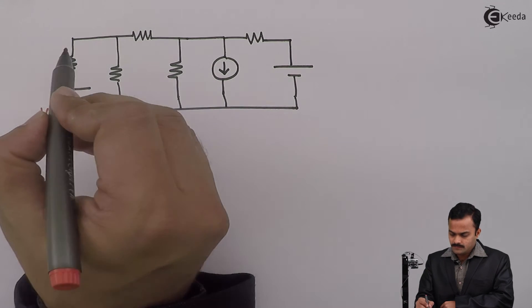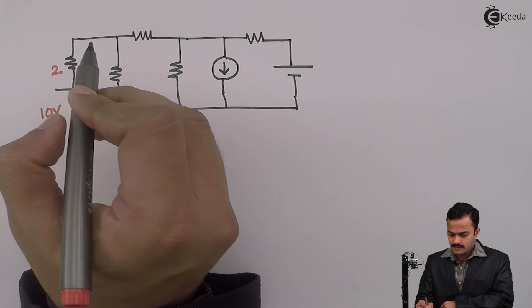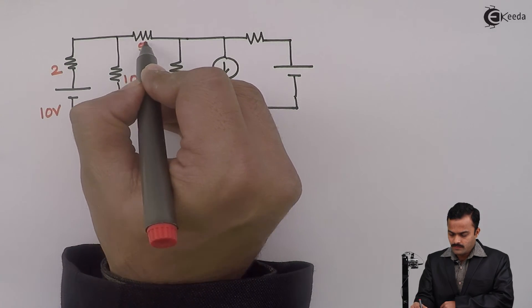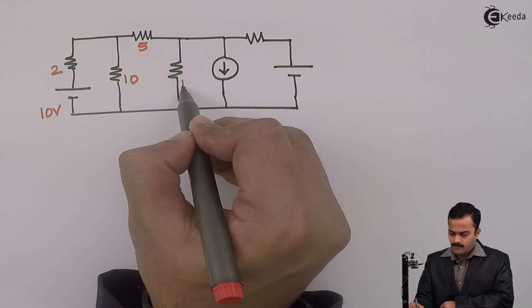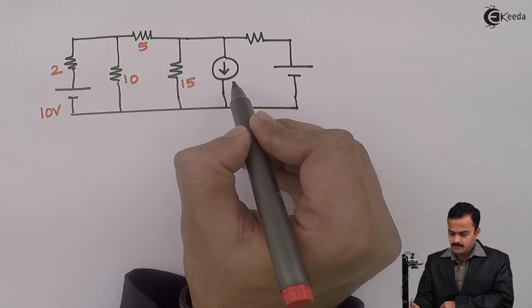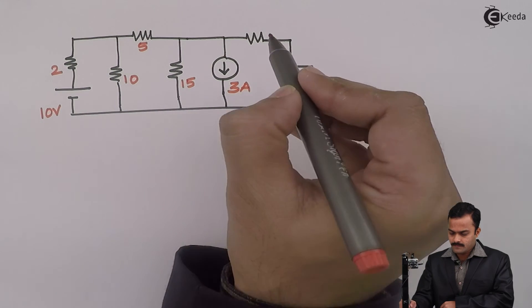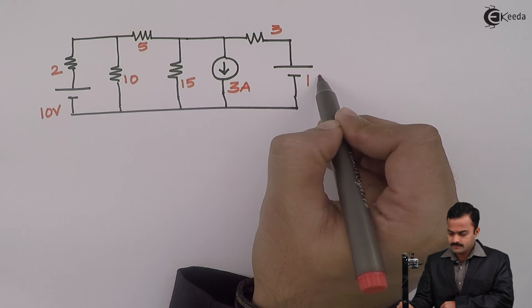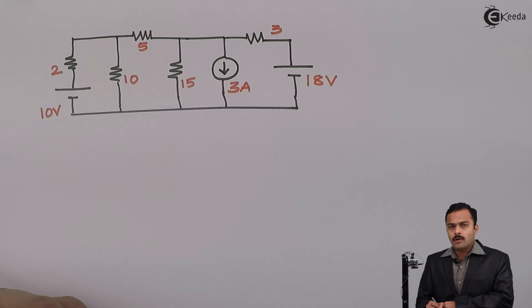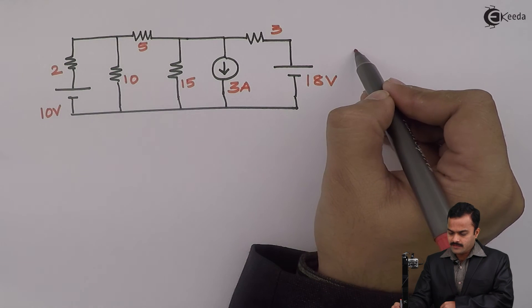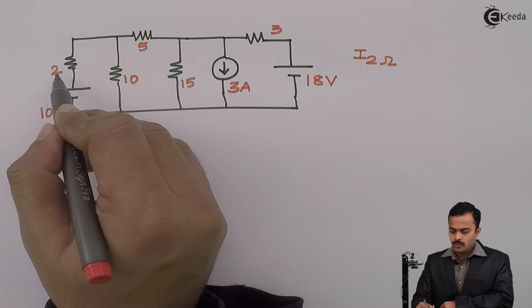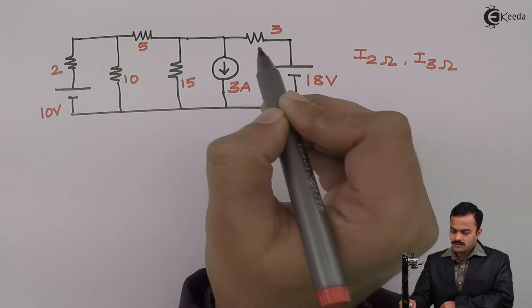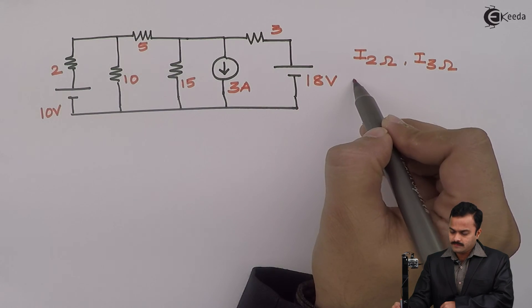The circuit has a 10 volt battery, a 2 ohm resistance, 10 ohm, 5 ohm, 15 ohm, a 3 ampere current source, and a 3 ohm resistance connected in series with an 18 volt source. The objective is to find the current flowing through the 2 ohm resistance and the current flowing through the 3 ohm resistance using nodal analysis.